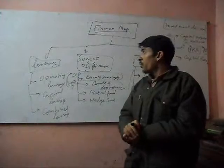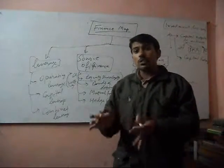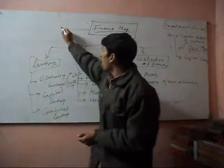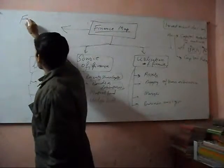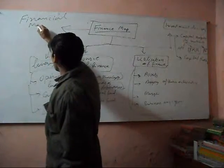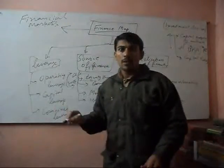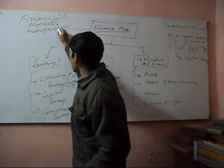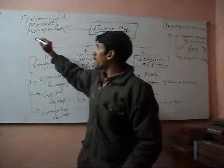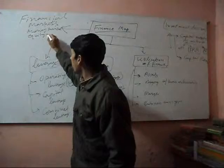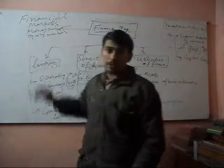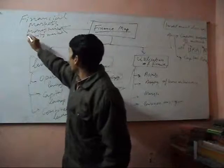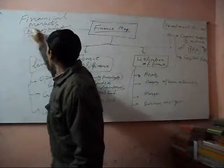One more decision we have to make is in which market the company will get its money. So in the finance map we also study financial markets. Financial market means money market. A company can get money from the money market or the equity market — share market, also called the stock market. For example, the New York Stock Exchange and other markets.